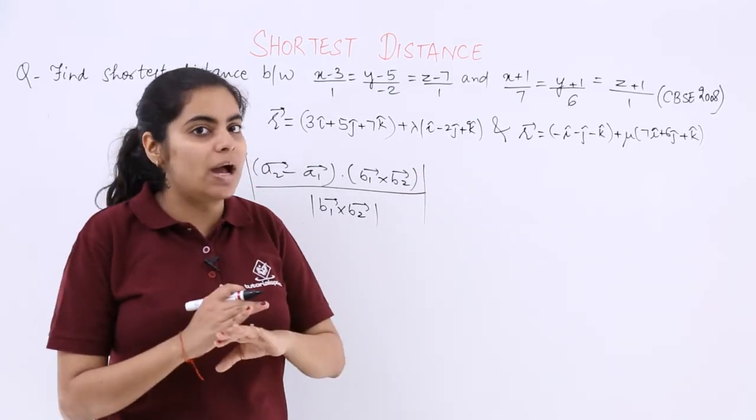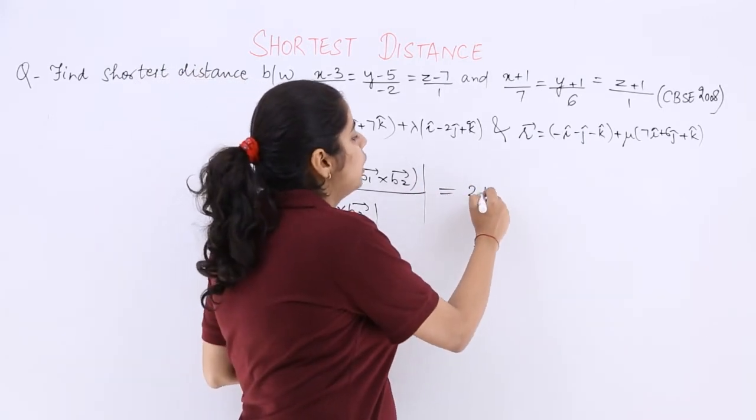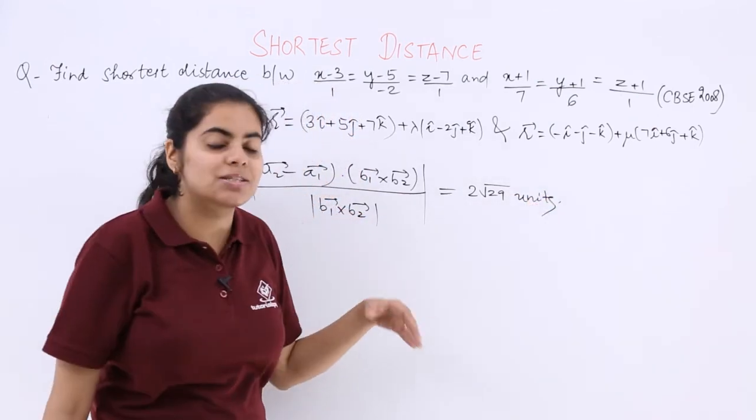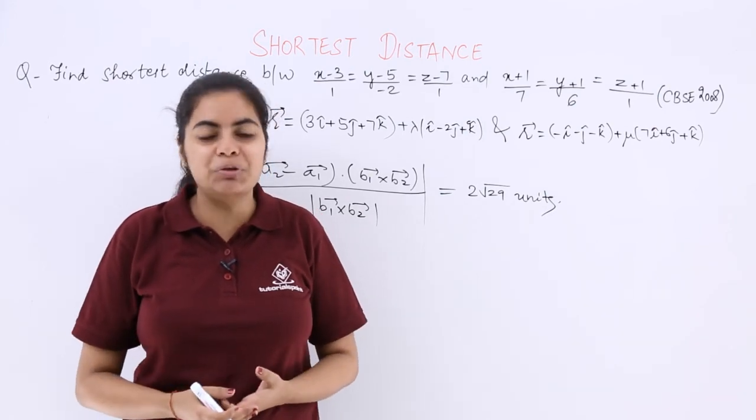So this is a task for you. I am not doing this. This was the main thing that had to be done. I will just tell you the answer—when you solve it, the answer would come out to be 2√29 units. So you have to solve on your own, and please do not leave this. This is a practice question for you.